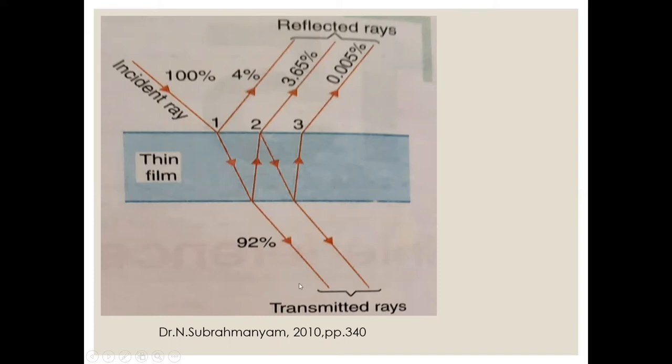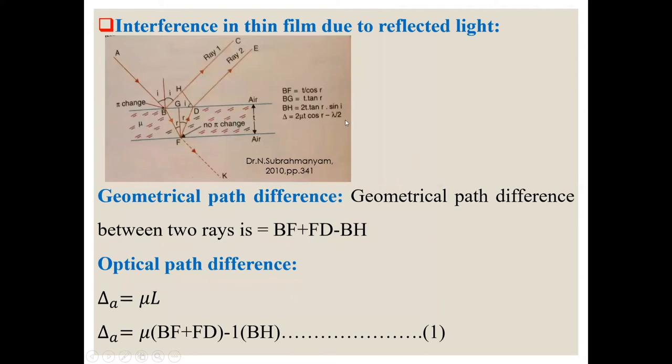So these are reflected rays. These are transmitted rays. We can see here intensity of these reflected rays are going down. So we will see interference in thin film due to reflected light.